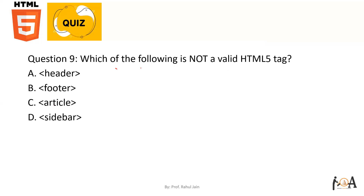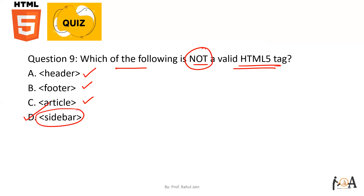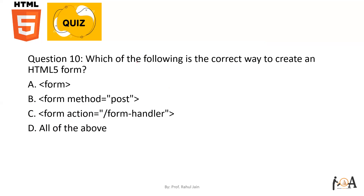Question number nine: which of the following is not a valid HTML5 tag? Header is a valid HTML5 tag. Footer is a valid HTML5 tag. Article is a valid HTML5 tag. The question asks which is NOT valid — option D, 'sidebar,' is not a valid HTML5 tag. So option D is the correct answer.